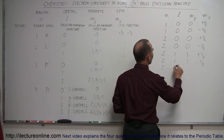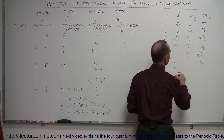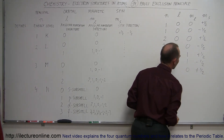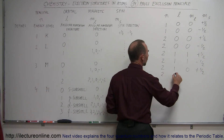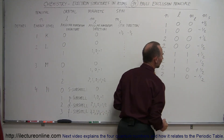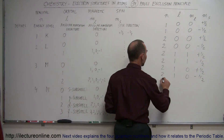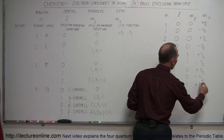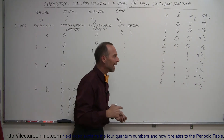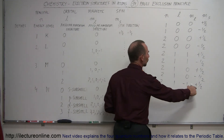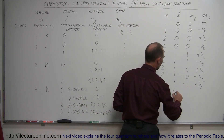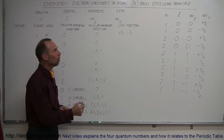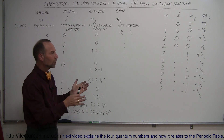Going on, we have again the same energy level, same p orbital subshell, but then a different p orbital and a spin direction of plus one-half. If a second electron exists in the same orbital, it would have a spin direction of minus one-half. Still in the same energy level, there is a third p orbital with a different angular momentum direction, and then a spin direction, and if a second electron appears in the same orbital, it would have to have a different spin direction, and so forth.